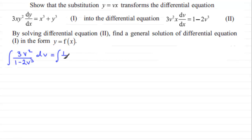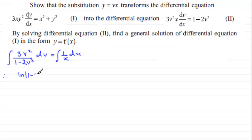If we integrate the left side, differentiating the denominator gives us minus 6v squared, which is minus 2 times the numerator. So it's going to be a natural log type — the natural log of the denominator in modulus, which is 1 minus 2v cubed — but we need an adjustment factor of minus a half. Then the integral of 1 over x is the natural log of the modulus of x, plus a constant of integration.